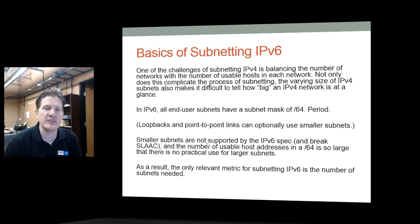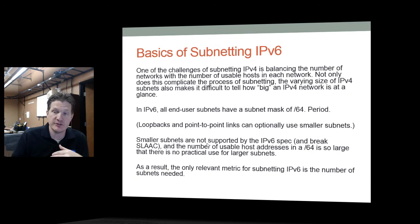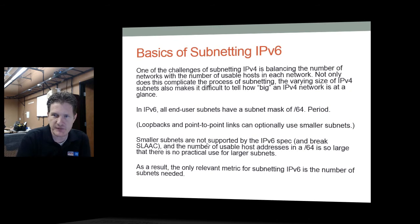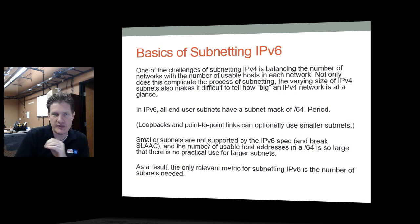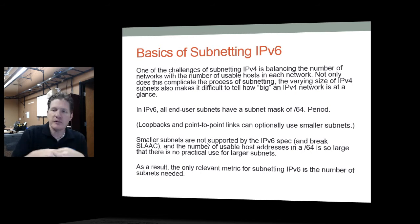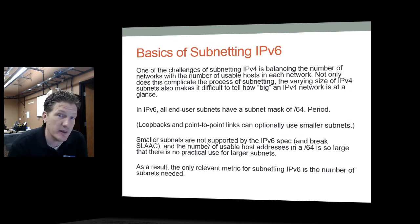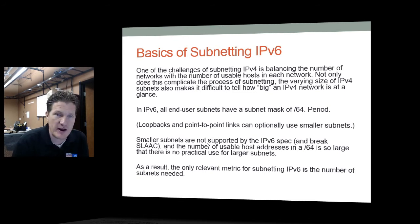One of the challenges of subnetting IPv4 was balancing the number of networks with the number of usable hosts. In IPv6, all end-user subnets have a subnet mask of /64 — everybody gets the same size network and you don't concern yourself with the number of hosts. There are smaller subnets for loopbacks and point-to-point links between routers, but these are specialty circumstances and not assigned to hosts. Using subnets smaller than /64 will break SLAAC and some router advertisement features.